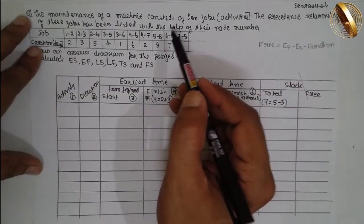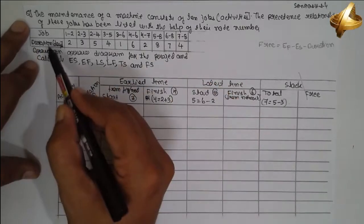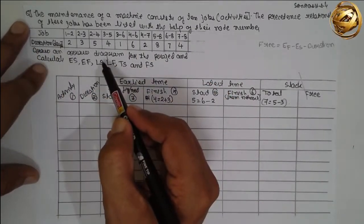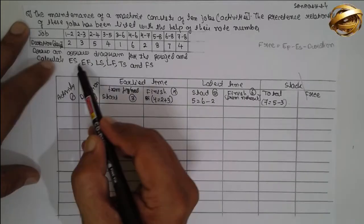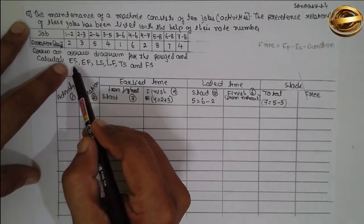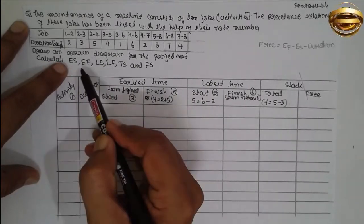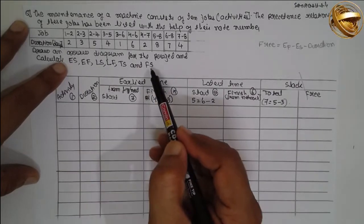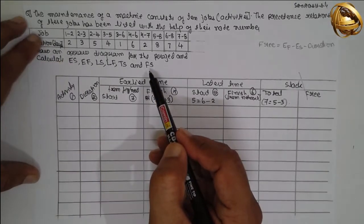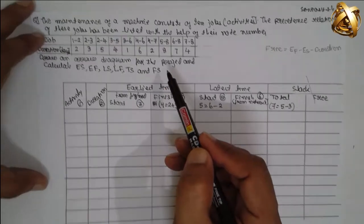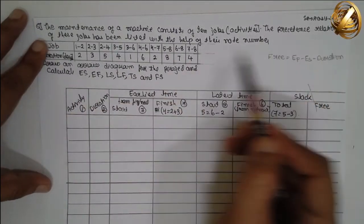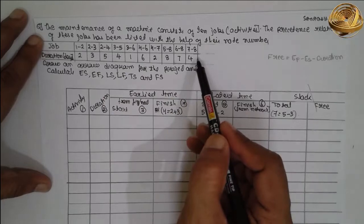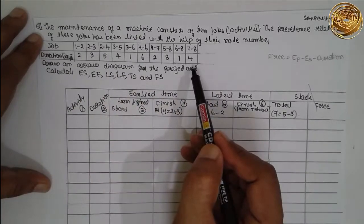This is the problem they have given. Job and duration are given. We have to find out earliest start, earliest finish, latest start, latest finish, total slack and free slack. This is the data they have given — the job processing time and duration.